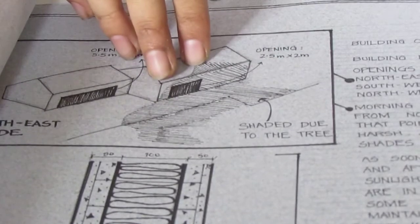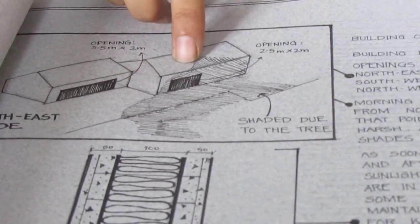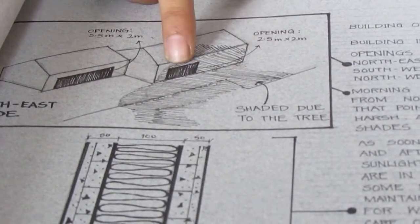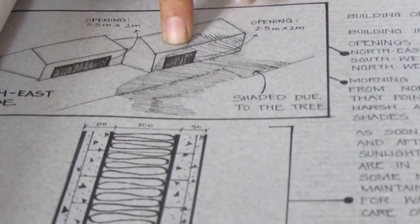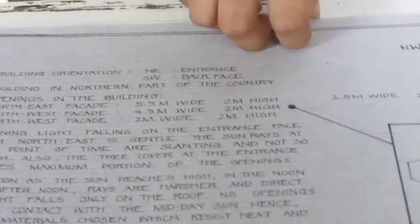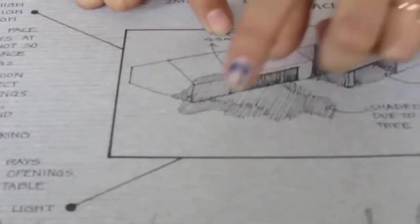The area was already in the shadow of the tree. So because of that I came up with no shading here. Then going to the southwest façade.